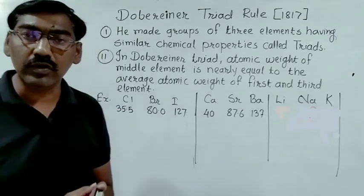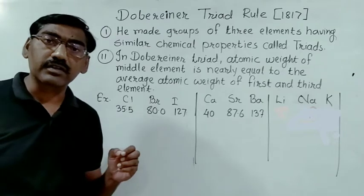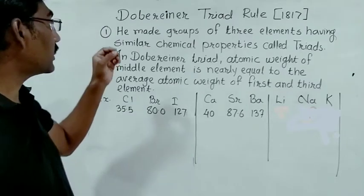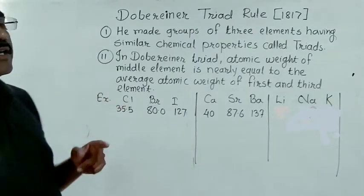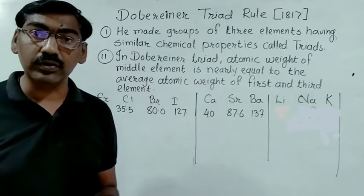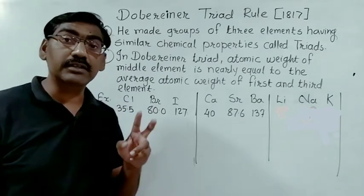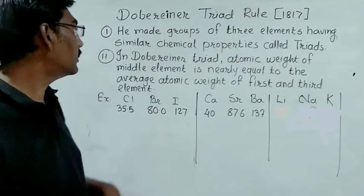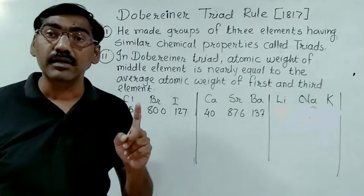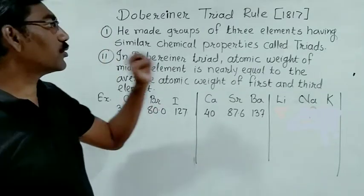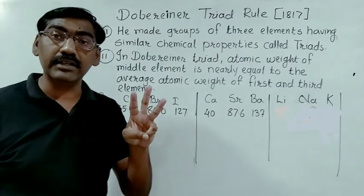Today we will discuss Dobereiner's Triad Rule, also popularly known as Dobereiner's Triads. Dobereiner grouped elements based on similar chemical properties. He made groups of three elements having similar chemical properties — these groups are called triads.